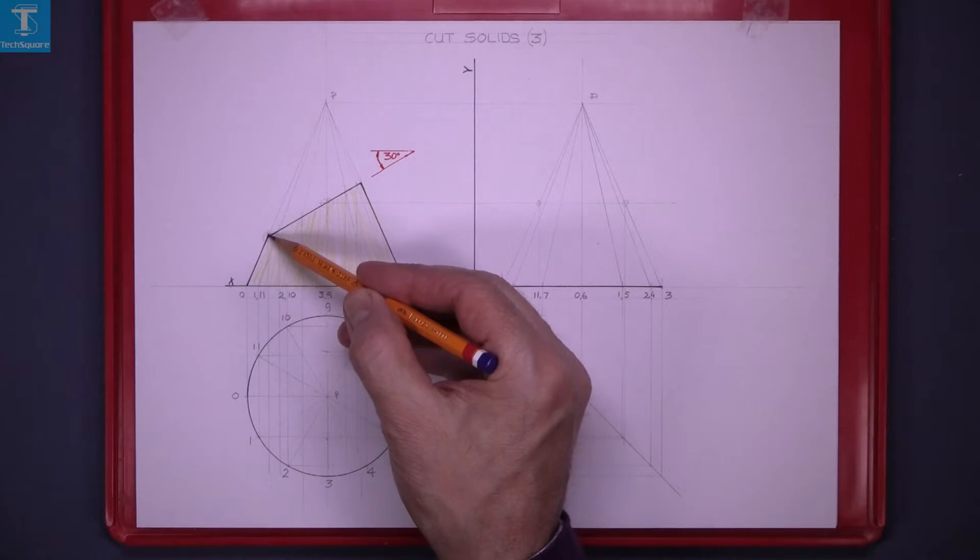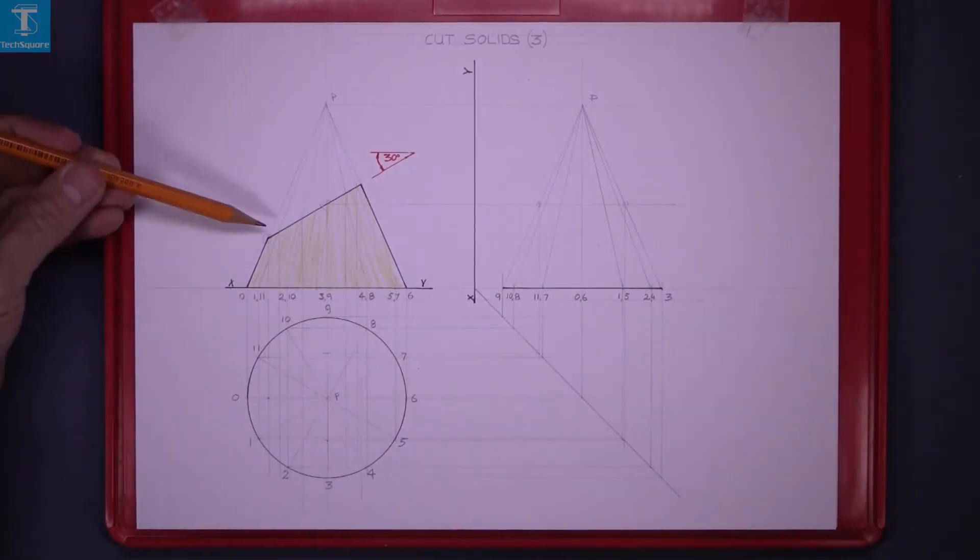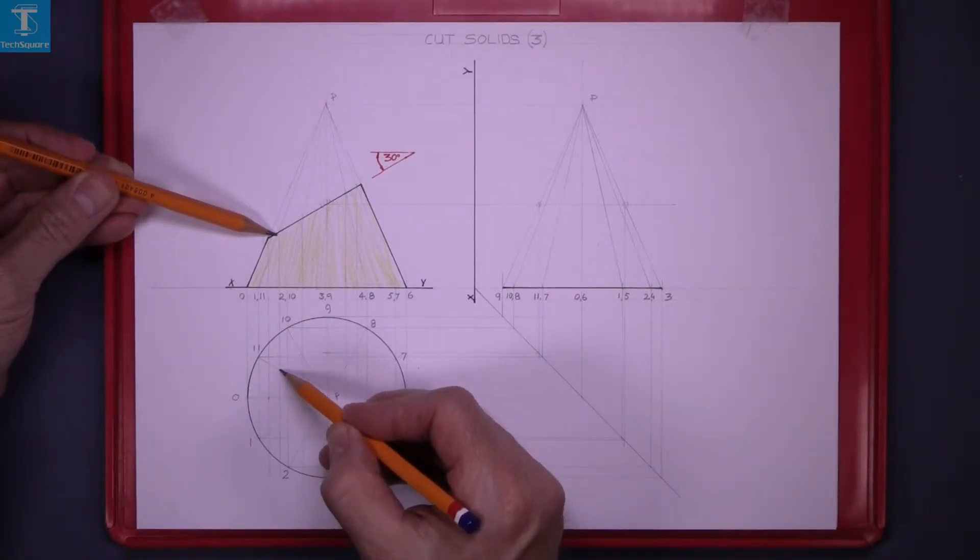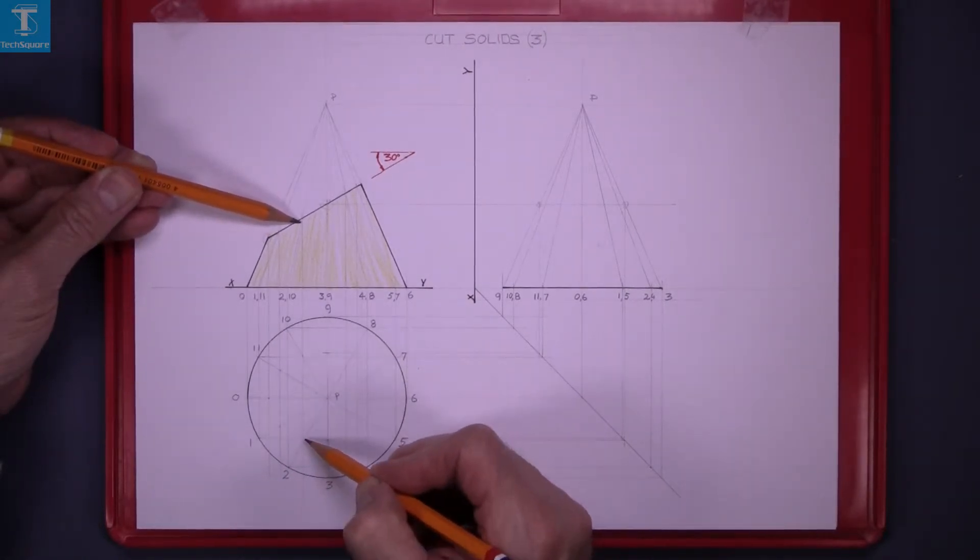Now locate the points from the elevation, so 0P. This point is on these two generators here. That's two more points.